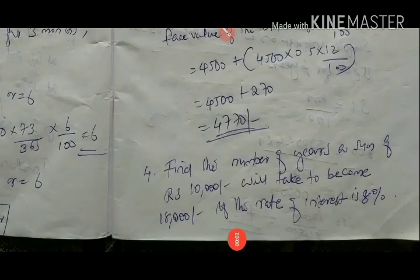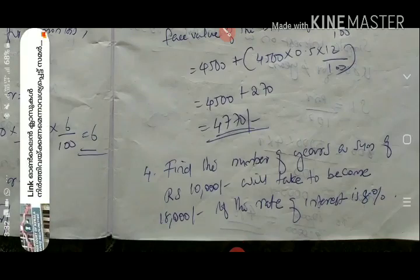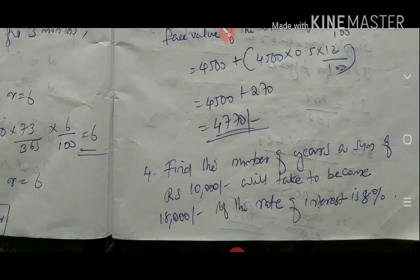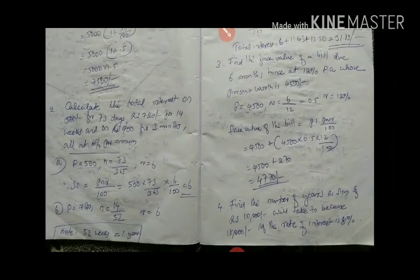Moving to the fourth question: find the number of years a sum of rupees 10,000 will take to become rupees 18,000 if the rate of interest is 8 percent. We are asked to find the number of years n by which an amount of rupees 10,000 will become 18,000 at a simple interest rate of 8 percent. The principal is 10,000 and 18,000 is the total amount including interest.